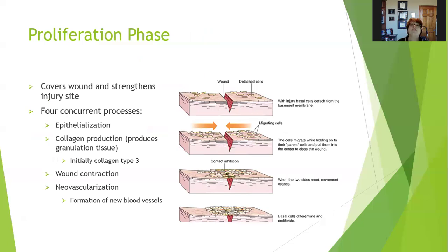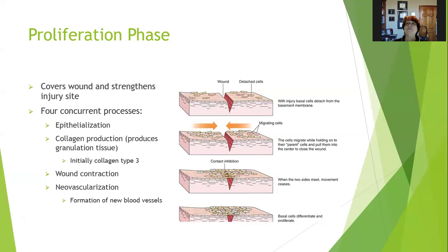During the proliferation phase, there are four things happening at once to cover the wound and strengthen the injury site. These four processes are happening concurrently: epithelialization, which is the creation of new cells; collagen production, which produces granulation tissue — and it's initially type 3 collagen, which is a weaker type of collagen; wound contraction; and neovascularization, which is the formation of new blood vessels.